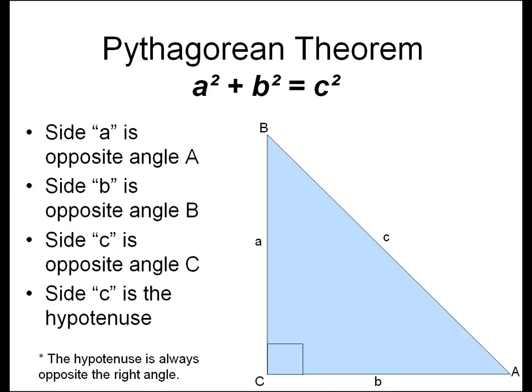Using the Pythagorean theorem. The Pythagorean theorem may be used to determine the values of the sides of a right triangle, where side A is opposite angle A, side B is opposite angle B, side C is opposite angle C. Side C is the hypotenuse, and the hypotenuse is always opposite the right angle.